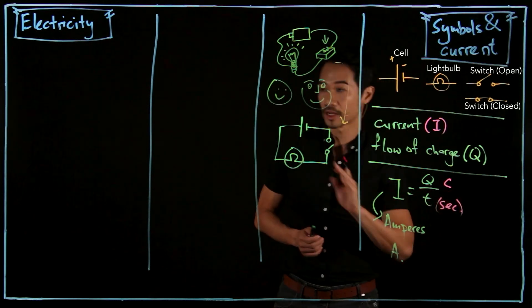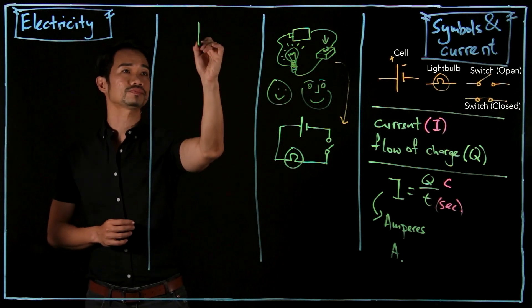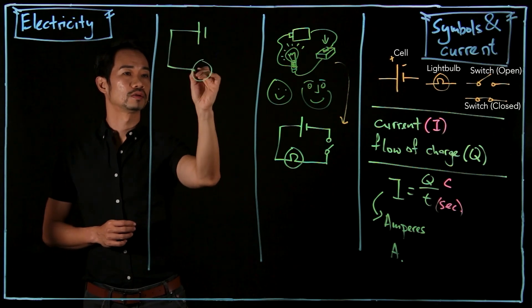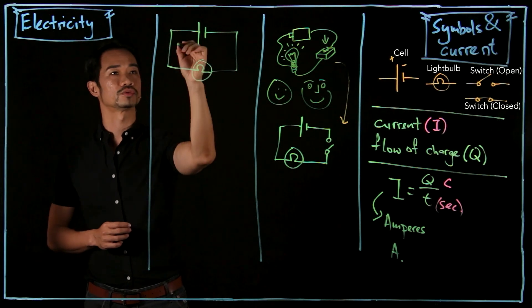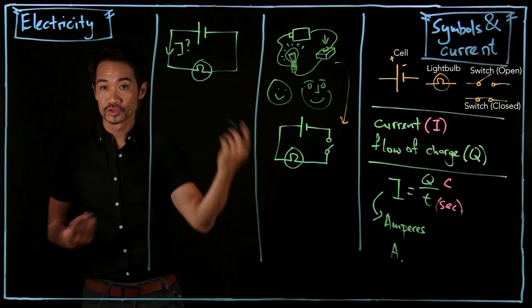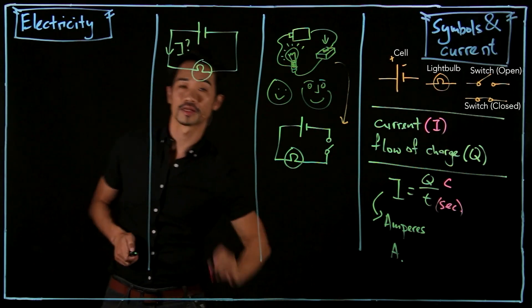So let me illustrate this with a work example. So let's have another setup. Battery, light bulb, and let's omit the switch. So we want to find out what is the current that's flowing through. So they will give you some information. For example, they might say that